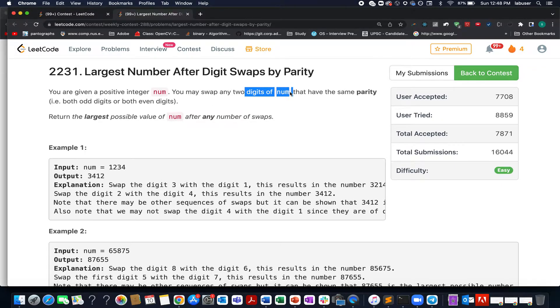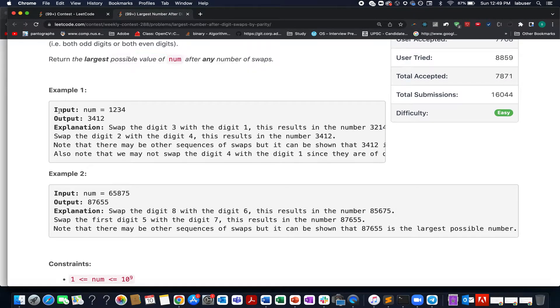In this question we are given a positive integer, and you need to swap any two digits of nums that have the same parity. We need to identify the largest possible number after performing any number of swaps.